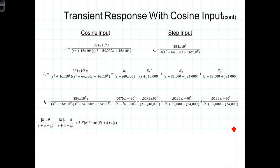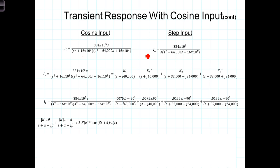Comparing this to the step input case where a DC current source was applied at t equals 0 — the step response — the two are shown side by side. With the cosine input there is an S over (S squared plus 16 times 10 to the eighth) term, which is the Laplace transform of the cosine input. In the step response case, there was just a 1 over S term. Otherwise the analysis is similar. Let's continue with a partial fraction expansion for I_sub_L with the cosine input.